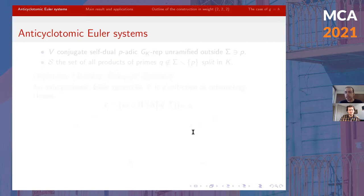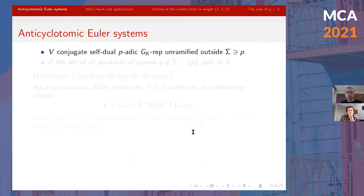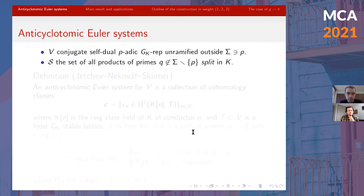Let me remind you of the definition of anti-cyclotomic Euler systems, which is slightly different from the one in Rubin's book. We let V be a conjugate self-dual representation of G_K, unramified outside a finite set of primes sigma, with p in sigma. We denote by S the set of all products of primes Q not in sigma — primes at which V is unramified — and we allow Q to equal p. The important condition is that all these primes Q must be split in K.